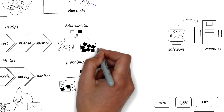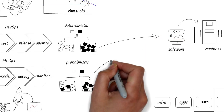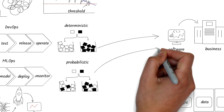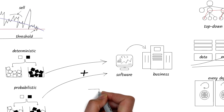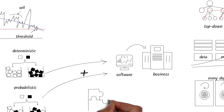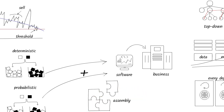Ultimately, tomorrow's systems will be a combination of both deterministic and probabilistic components. This means we'll have stable software through the DevOps process and probabilistic software through the MLOps process, both working together to deliver high value to customers. The question is: how do you put this together at your enterprise so that you can build scalable and flexible systems? You must focus on building systems by assembling different components rather than building everything from scratch every time. That's a crucial strategy.